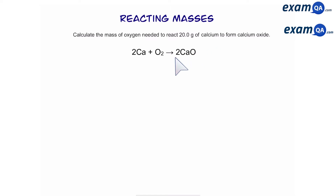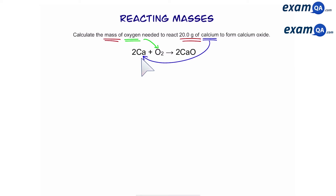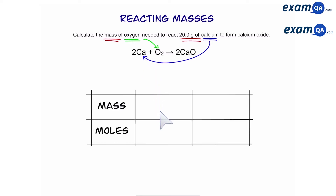We have the balanced equation. The first thing you want to do is identify the 'mass of' and 'grams of' in the question — underline where it says 'mass of' and where it says 'grams of'. You can see it says mass of oxygen and grams of calcium. Next, we're going to make a table called mass and moles. Those two things — oxygen and calcium — will go on your table. Anything else, for example calcium oxide, you can completely ignore.